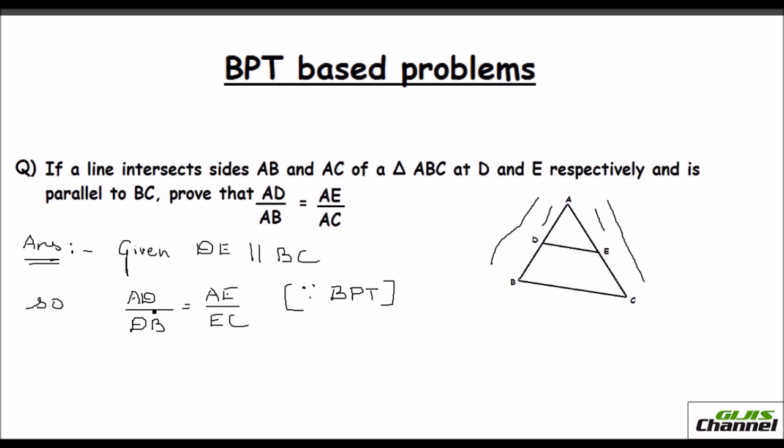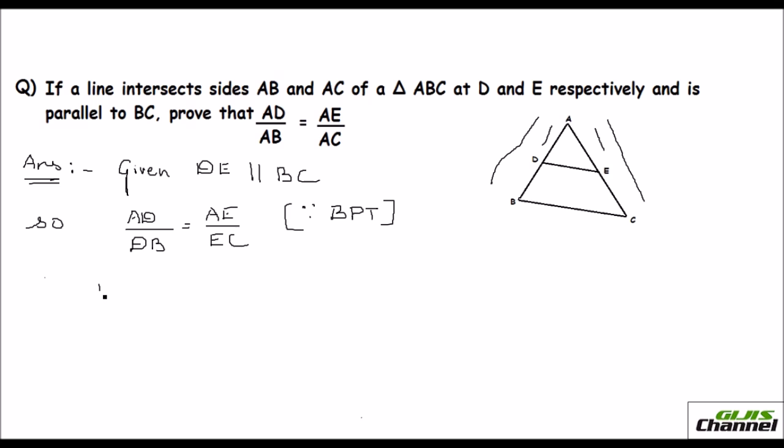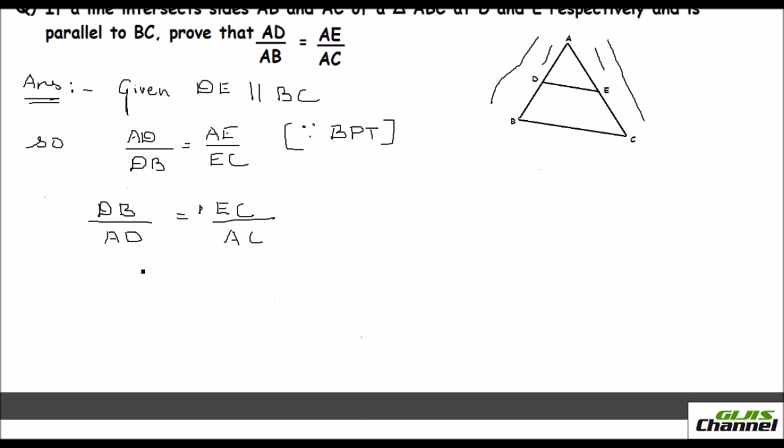So as per BPT theorem, you can say that AD over DB equals AE over EC. But that is not what you need to prove. You have to prove that AD over AB is equal to AE over AC. So let me write this as DB over AD. I just flipped this and I got this. Here, this side also, it is EC over AE. So I just flipped this one. Now I am going to add 1 on both sides. Adding 1 to both sides.